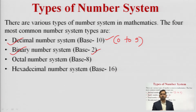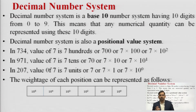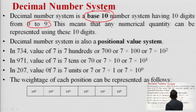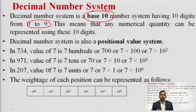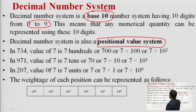Binary, decimal, octal, and hexadecimal — these four are the most important number systems. Starting with the decimal number system: the base is 10, having 10 digits from 0 to 9. Any numerical quantity can be represented with these 10 digits. This decimal number system is also known as the positional value system — we will see what this means.